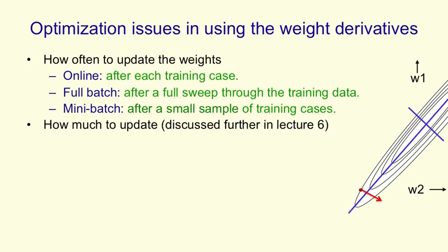Then there's the issue of how much we update the weights, how big a change we make. So we could just, by hand, try and pick some fixed learning rate, and then learn the weights by changing each weight by the derivative that we've computed times that learning rate.